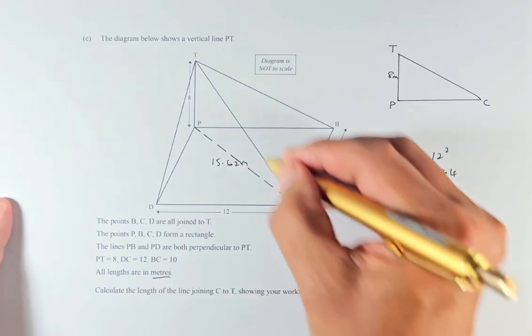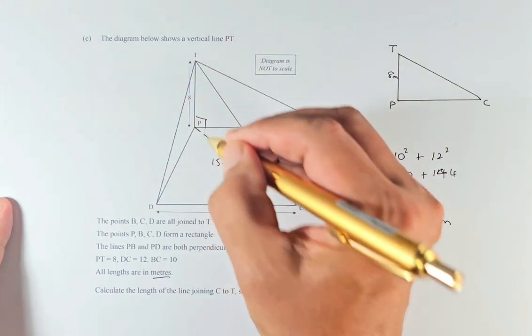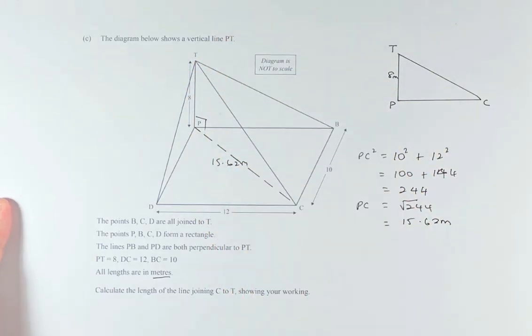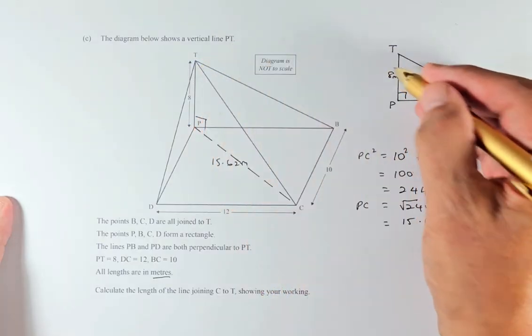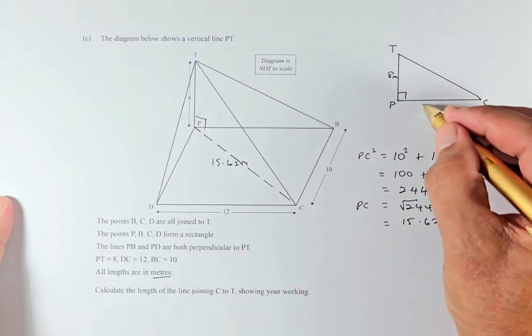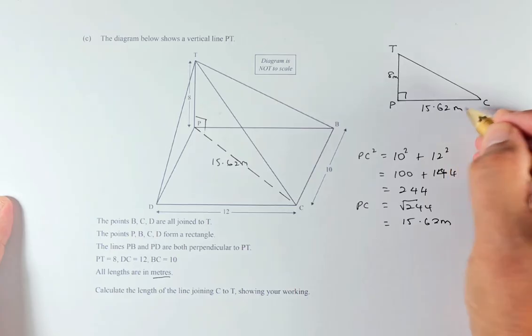Now we're going to use this triangle because this is 90 degrees, as this is three-dimensional. From the ceiling to the ground, it's going to be 90 degrees. So that is 90 degrees. And we know that PT is 8, and now we found that PC is 15.62. We need to find TC. That's what they asked you to find.